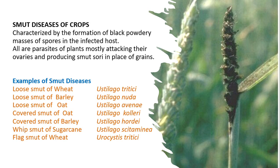Smut diseases are characterized by the formation of black powdery masses of spores inside the infected host, mainly the grains. All are parasites of plants, mostly attacking the ovaries of the flowers and producing smut in place of grains — so grains are actually filled with this black mass of spores.